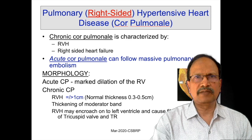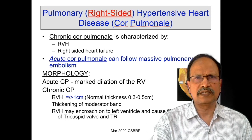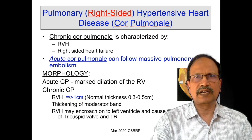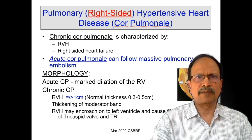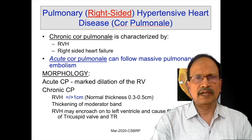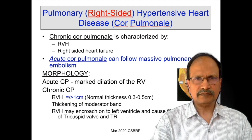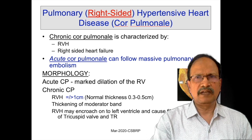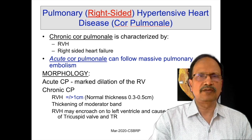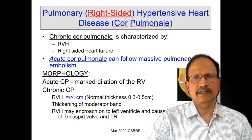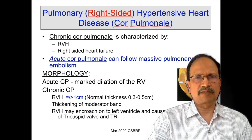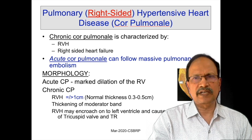Coming to pulmonary hypertensive heart disease or right-sided heart disease, mainly called cor pulmonale: chronic cor pulmonale is characterized by right ventricular hypertrophy and right-sided heart failure. There is also a condition known as acute cor pulmonale, which is due to massive pulmonary embolism. Morphologically, acute cor pulmonale shows dilatation of the right ventricle. In chronic cor pulmonale, right ventricular hypertrophy is equal to or more than one centimeter, with thickening of the moderator band.